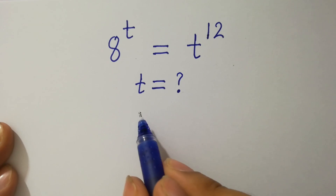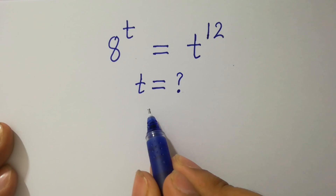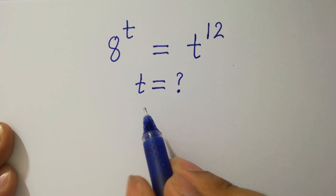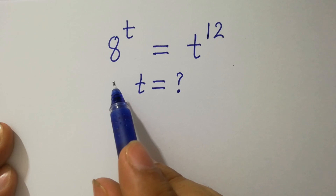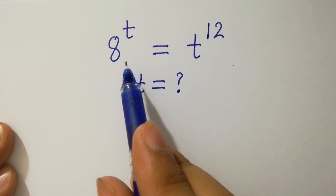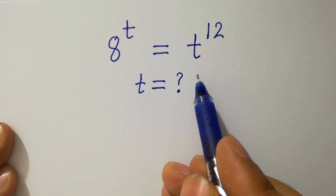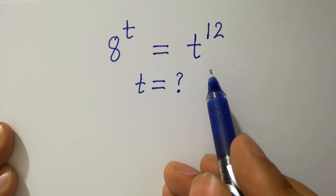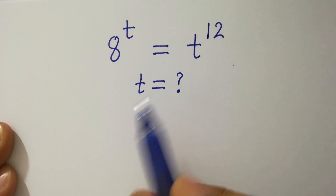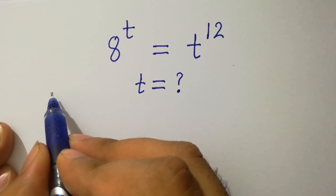Hello friends. Find the value of t if 8 to the power t equals t to the power 12. Let's have a solution.